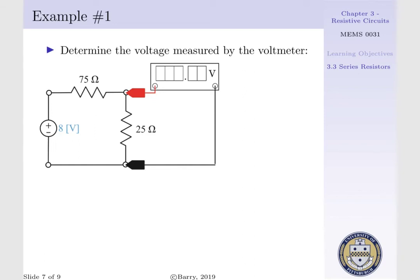Let us look at example one. Say we want to determine the voltage measured by the voltmeter. In our circuit below we have an 8 volt source supplying a potential to a 75 and 25 ohm resistor that exists in a series configuration.